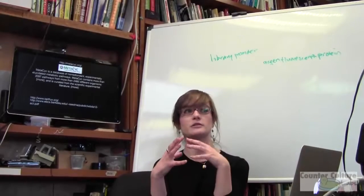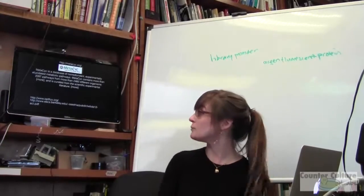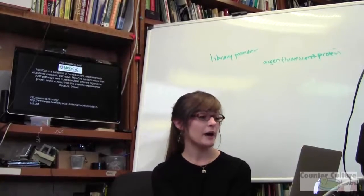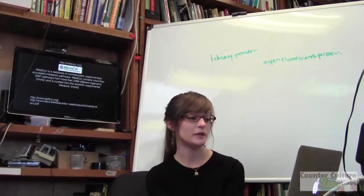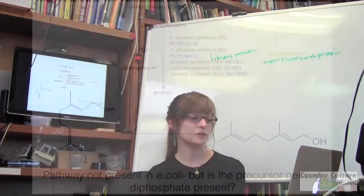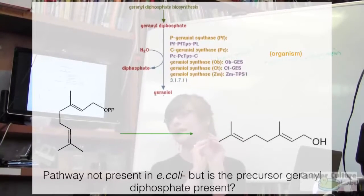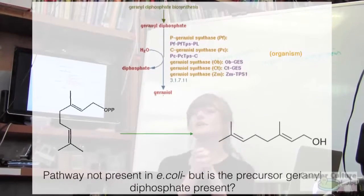When you go to MetaCyc you'll see subcategories — there's EcoCyc for E. coli, PlantCyc for plants, and so on. MetaCyc is the compilation of all of those together. If you type in 'geranial' in the search bar, you get options to look at the geranial biosynthesis pathway. It tells you that geranial is produced from the geranyl diphosphate pathway, and geranyl diphosphate branches off into many other small molecules, one of which is geranial.